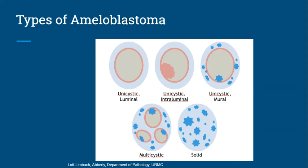Solid ameloblastoma is when the tumor consists of one solid mass. Unicystic ameloblastoma occurs when there is one large cyst; these cysts can be classified as either luminal, intraluminal, or mural. Multicystic ameloblastoma is when the tumor consists of many small cysts.